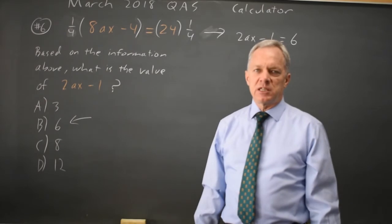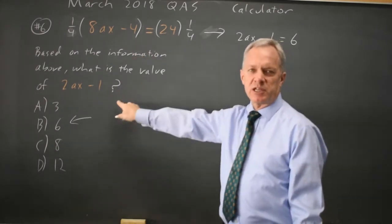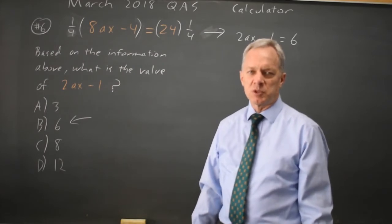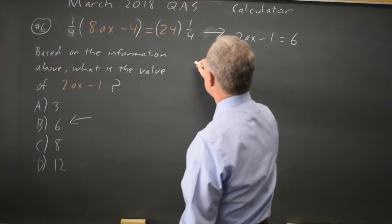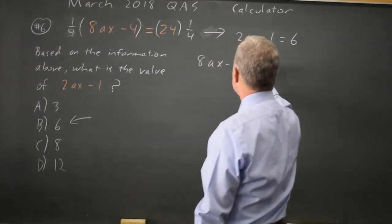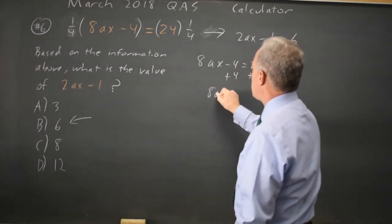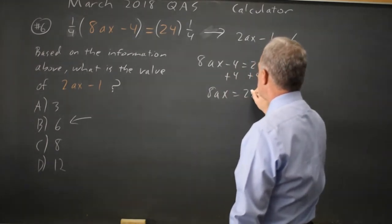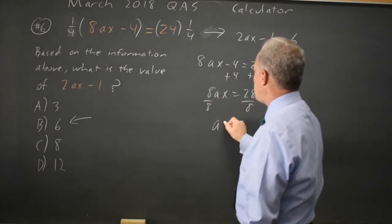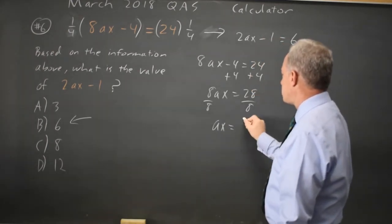If I don't see that dividing by 4 gives me the expression they're asking for, or that dividing by 4 simplifies this because they're all multiples of 4, I can collect like terms. 8ax minus 4 equals 24. Add 4 to both sides: 8ax equals 28. Divide by 8, and ax equals 28 over 8, which is 14 over 4, which is 7 over 2.